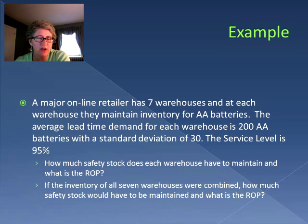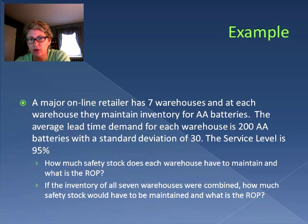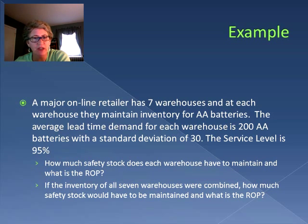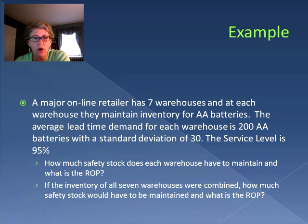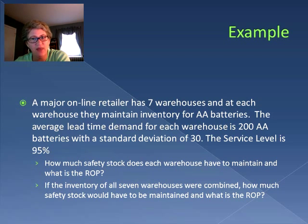A major online retailer has seven warehouses, and at each warehouse they maintain inventory for AA batteries. The average lead time demand for each warehouse is 200, with a standard deviation of 30, and we're trying to have a 95% service level. We're going to look at this two ways: one is an individual warehouse to figure out the safety stock and reorder point, and then we'll look at what happens when we combine all seven warehouses together and calculate the safety stock and reorder point.